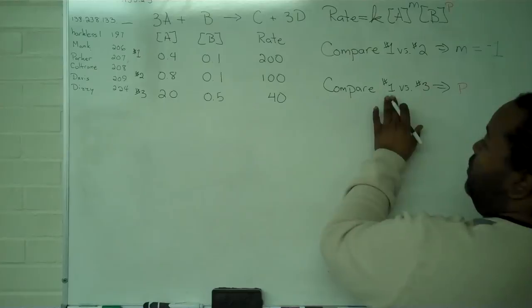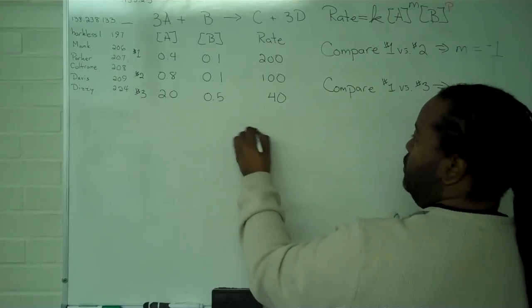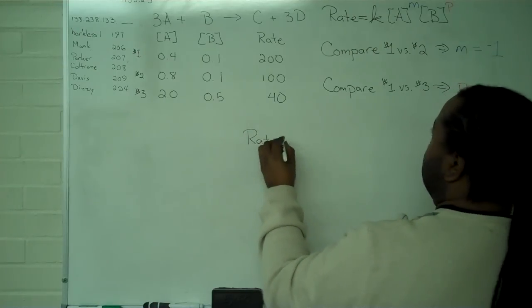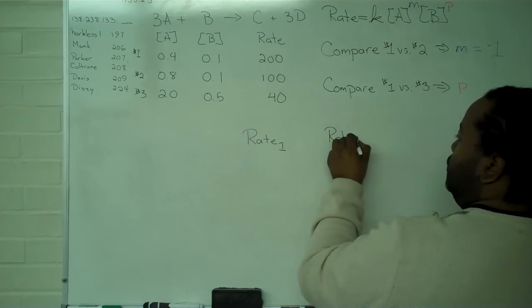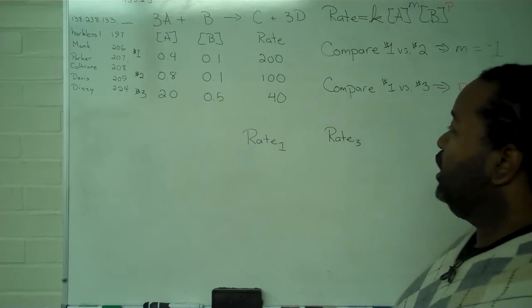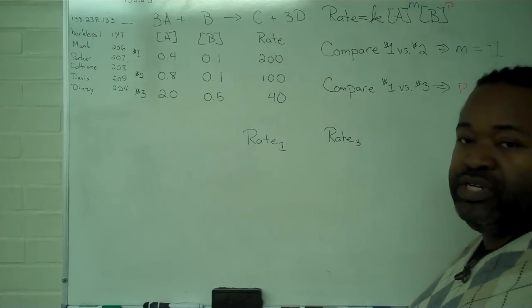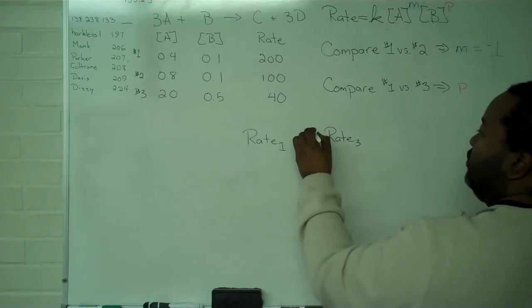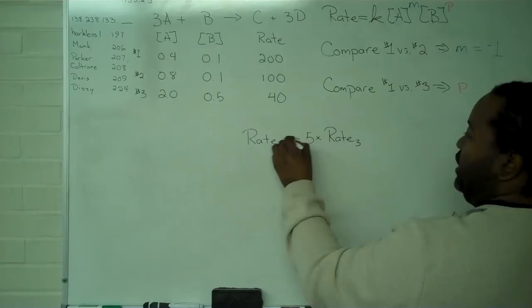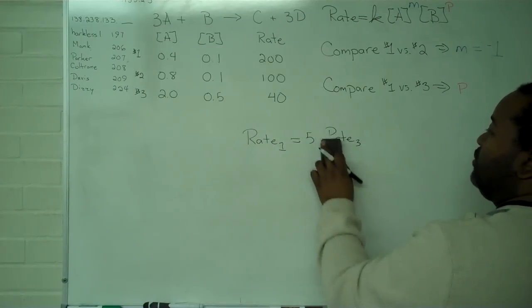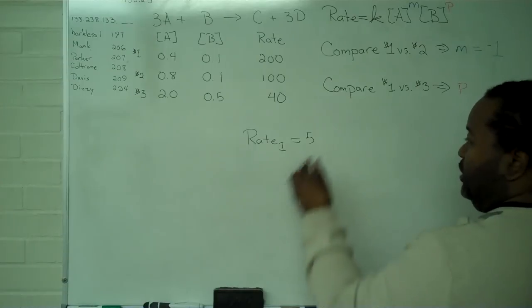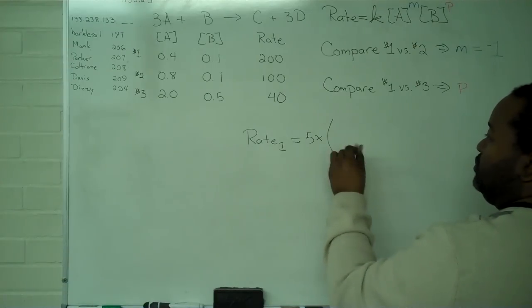We do the same thing. We're comparing 1 versus 3. I want to look at rate 1 versus rate 3. Comparing 200 to 40, if I multiply by 5, that allows me to have an equality. So, I'm going to erase out rate 3 and replace it with actual numerical data.